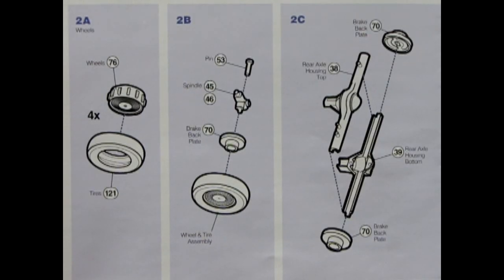Assembly step number two shows our wheels and axle going together. First off we have this wheel hubcap arrangement which goes into our single tire and you want to repeat that four times. Then you've got your wheel assembly going on to this brake backing plate as well as our spindle and it's all held together with this little pin.